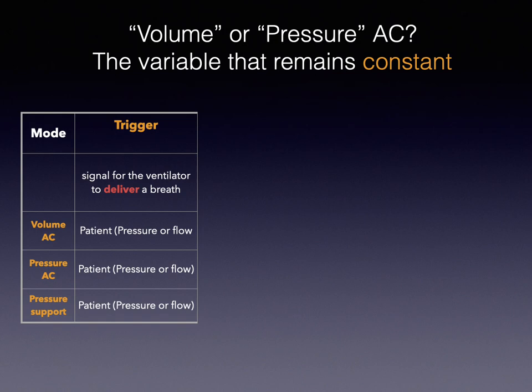The first thing the machine needs to know is when the patient wants to initiate the breath — that's called the trigger. The patient needs to trigger the breath, the machine detects that signal knowing the patient is initiating the breath, and the inspiration cycle begins. The machine can detect whether the patient makes a negative pressure or reaches a certain inspiratory flow, so that the machine knows the human is trying to take a breath.